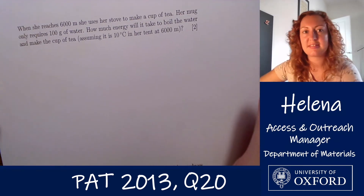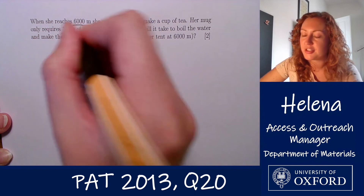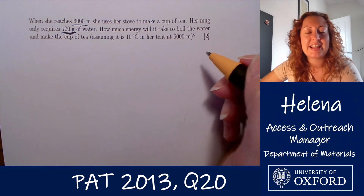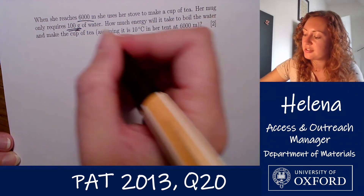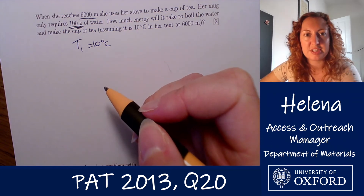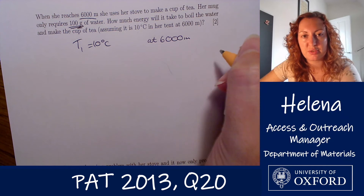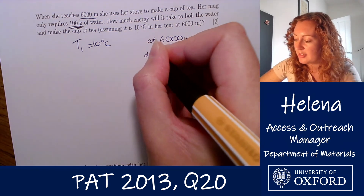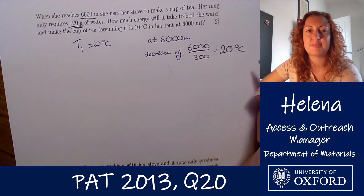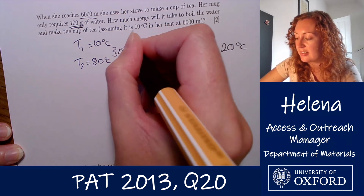She has now climbed 6,000 metres and wants to make a cup of tea, boiling only 100 grams of water — just enough for the mug. We need to find the new boiling point of water. At 6,000 metres, the boiling point decreases by one degree every 300 metres, so the total decrease is 6,000 ÷ 300 = 20 degrees C. The boiling point is now 80 degrees C, giving us a delta T of 70 degrees C.